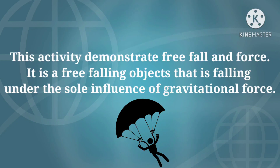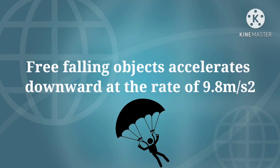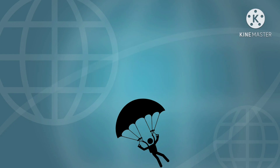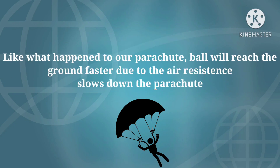This activity demonstrates free fall and force. It is a free falling object that is falling under the sole influence of gravitational force. Free falling objects accelerate downward at the rate of 9.8 meters per second squared. Try to throw a ball or any object up in the air — sooner or later, it will fall back to the ground, like what happened to our parachute.